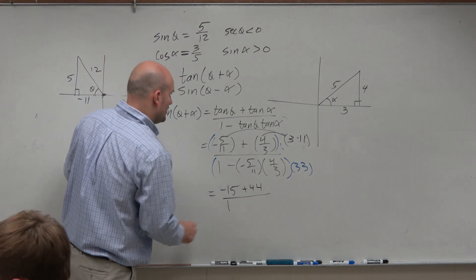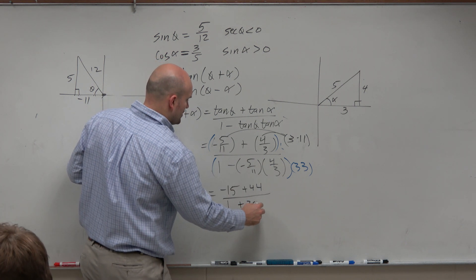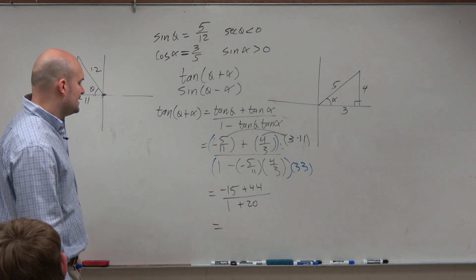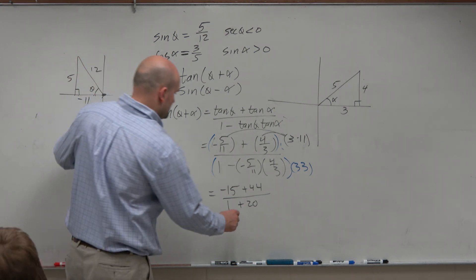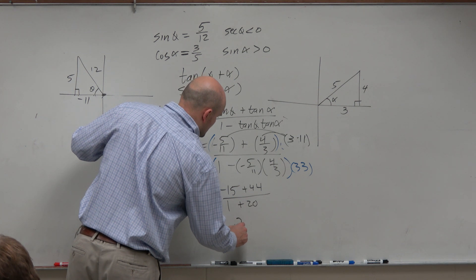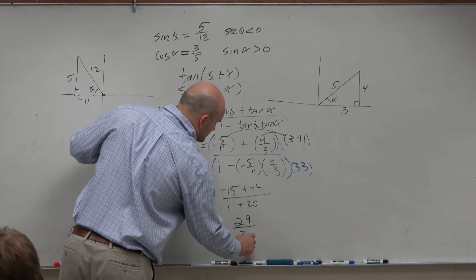All over a 1 minus, here you can see those will all divide out, plus 20. So we say negative 15 plus a 44 is going to be 29 over 21.